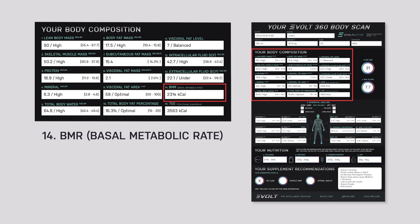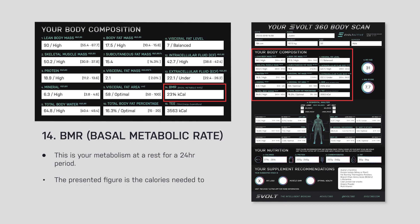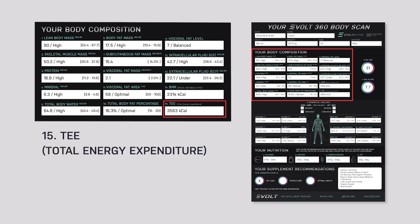Then we go to basal metabolic rate — that's our metabolism at rest over a 24-hour period. Basically, with no work whatsoever, lying still for 24 hours, that is the calories your body needs to maintain its same composition.